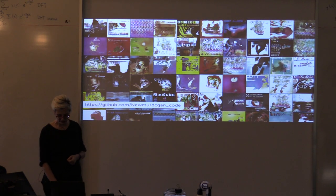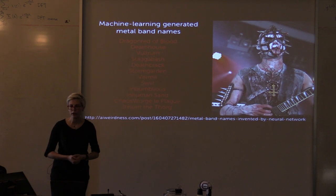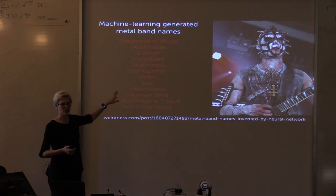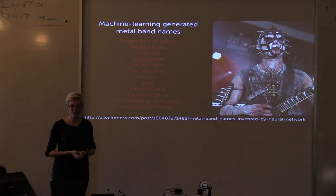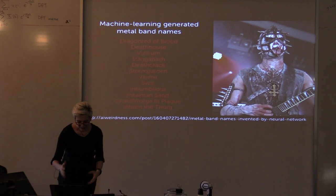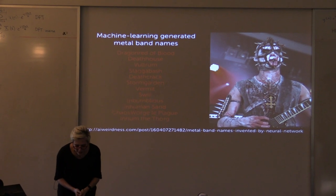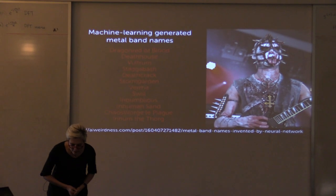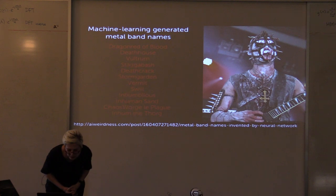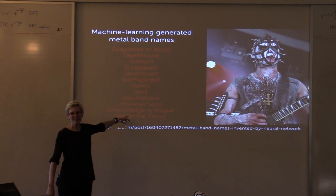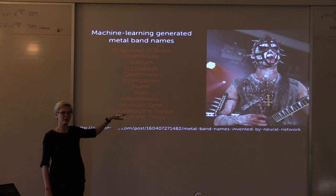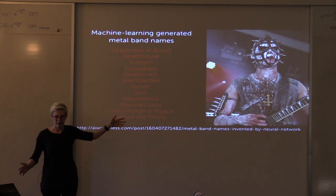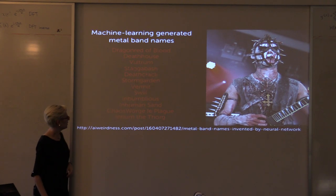One of my favorite people on the internet right now, who you should follow on Twitter, is Janelle Shane, and she does all sorts of really fun text generation — a lot of them are band names. This is metal band name generation, and some of them are really fun. It's clearly learned something about what it means to be a metal band — we've got Dragon Red of Blood, Death House, Voltrum. And then there's some questionable choices, like Chaos Warge La Plague. This is kind of emblematic of where deep learning generation systems are at the moment: pretty good, some questionable judgment, but getting better all the time.